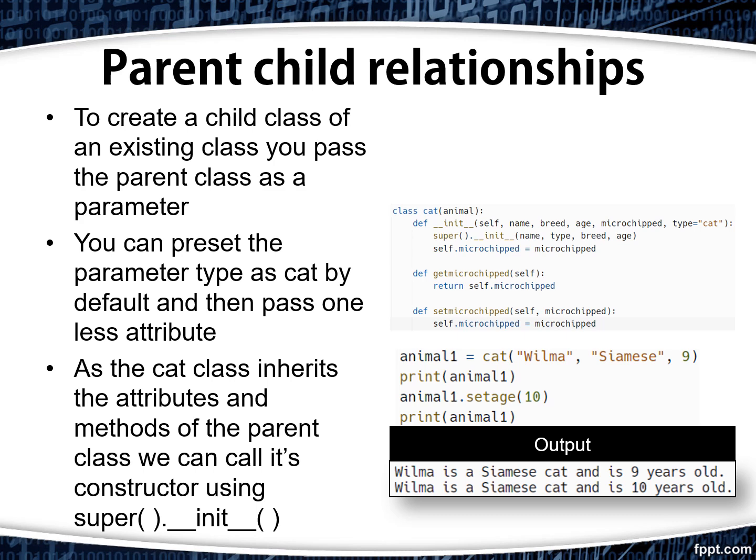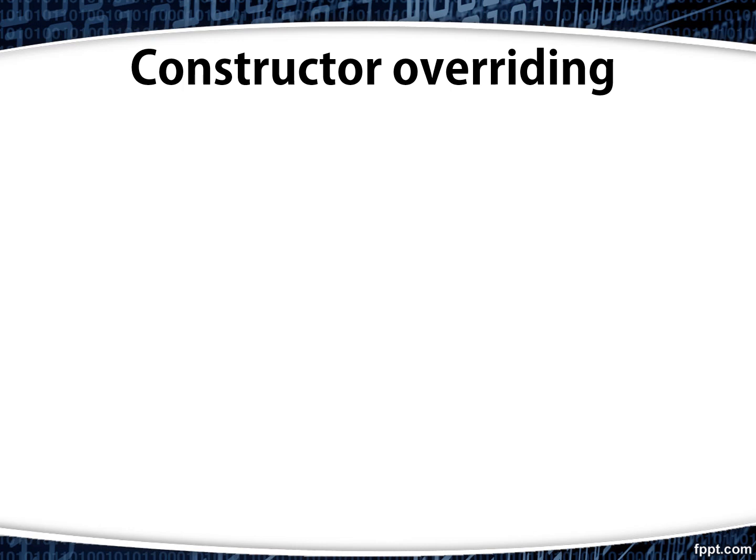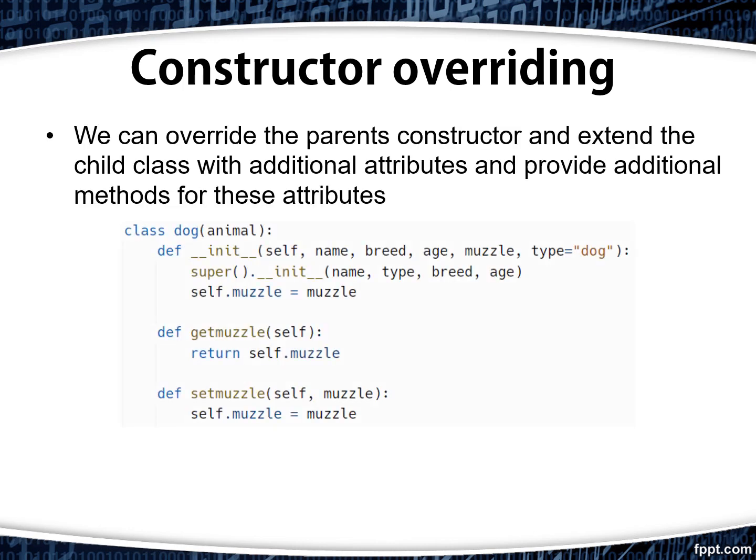You can see in the example that the cat object is able to call the string method from animal and the set age method from animal. When creating the constructor in a child class, we can override the parent's constructor and extend the child class with additional attributes, then provide additional methods for these attributes. In this example, the dog child class inherits all of the attributes from the animal class, but we also need an attribute for whether or not the dog needs to wear a muzzle. We've also created the appropriate getters and setters: get muzzle and set muzzle.